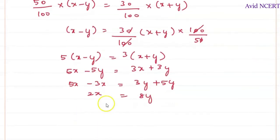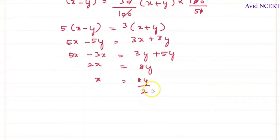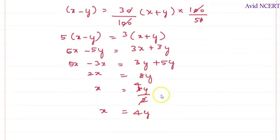So we can find x here, which is x equals 2 comes down here, which is 8y by 2, which is equal to 4y. So x equals 4y. The value of x we know here is 4y.